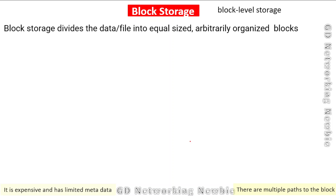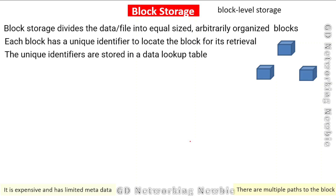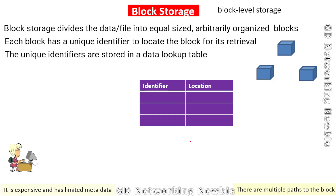The second form of storage is block storage. Block storage divides our data into equal-sized, arbitrarily organized blocks. For example, a file, picture, video, or audio can be broken into blocks and those blocks can be stored in non-sequential locations across multiple hard drives. Each block has a unique identifier which is helpful in locating the block for retrieval, and these unique identifiers are stored in a data lookup table. When a user wants to access any block, they consult this data lookup table and retrieve the data.